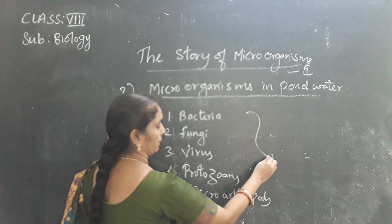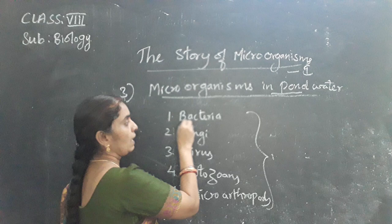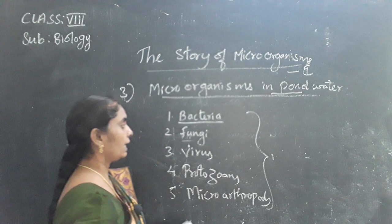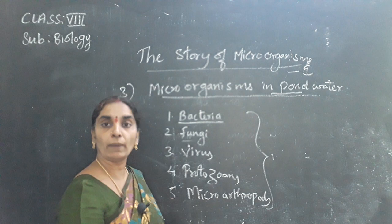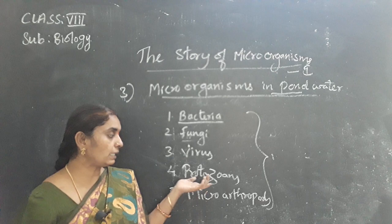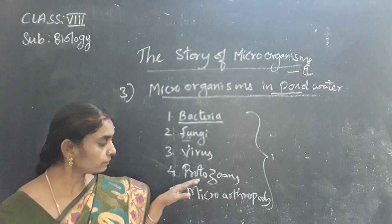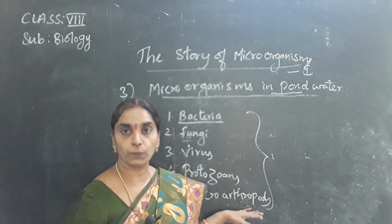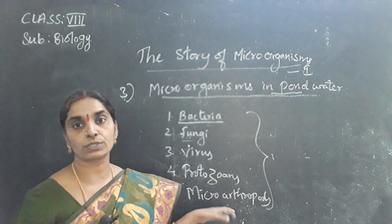Among these, which are present in pond water? Bacteria — they are present everywhere, so they are also present in pond water. Fungi depend on dead and decayed organic matter, so they develop on dead organisms. Viruses are also microscopic organisms which cannot be seen with the naked eye and are present in pond water — seen only with the electron microscope. Protozoans are minute microscopic organisms formed in water.